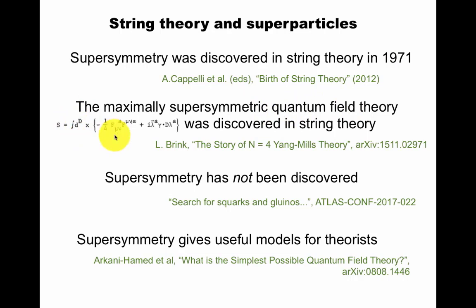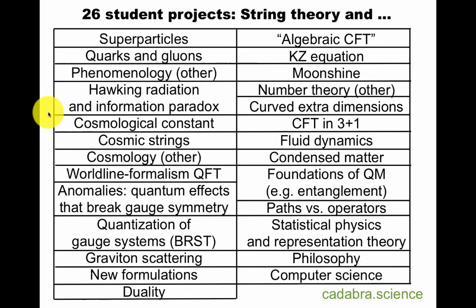String theory and superparticles. Supersymmetry was discovered in string theory in 1971. The maximally supersymmetric quantum field theory, with Lagrangian here, was discovered in string theory, as summarized beautifully here by Lars Brink. Supersymmetry has not been discovered, however. Notice the different use of discovered in these three sentences. But I think it's fair to say that supersymmetry gives useful models for theories, whether or not it is directly relevant to current particle physics, as explained, for example, in this paper.